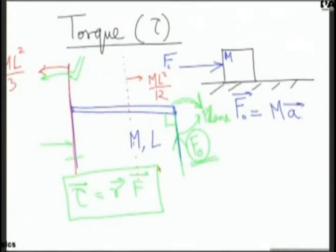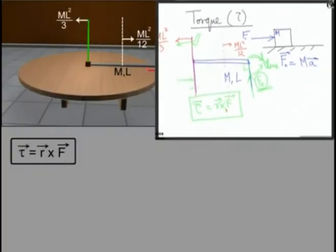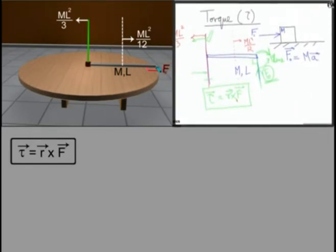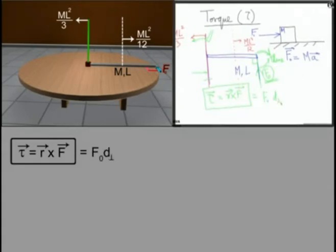I intentionally make some mistakes to check your alertness levels — so I am not an idiot who writes R cross F without the cross product notation. Torque due to a force is denoted by R cross F. In layman's language, torque equals force into perpendicular distance from the axis. Here, force is F0 and the perpendicular distance from the axis is L0, so the torque will be F0 into L0.